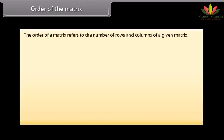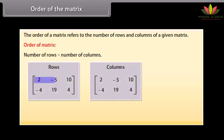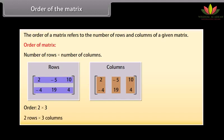Order of the matrix. The order of a matrix refers to the number of rows and columns of a given matrix. By convention, the order of a matrix is given by number of rows by number of columns. Here we can see two pictures of the same matrix with the rows and columns highlighted. The order of this matrix is 2 by 3, that is, 2 rows by 3 columns.